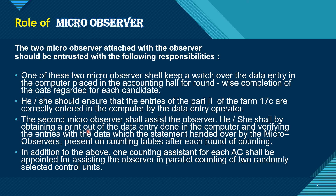The second Micro-Observer shall assist the observer. He or she shall be obtaining a printout of the data entry done in the computer and verifying the entries with the data from the statement handed over by the Micro-Observer present on counting tables after each round of counting.